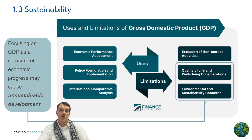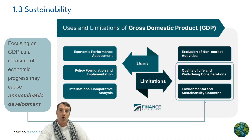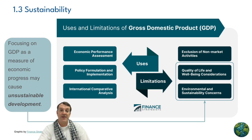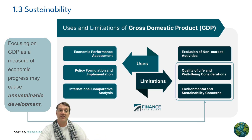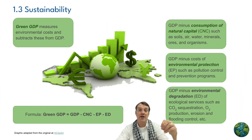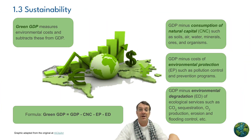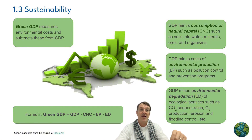Focusing on GDP as a measure of economic progress doesn't account for environmental costs or social well-being, so it only addresses the economic pillar of sustainability — not the social or ecological pillars. This means relying solely on GDP can lead to unsustainable development.